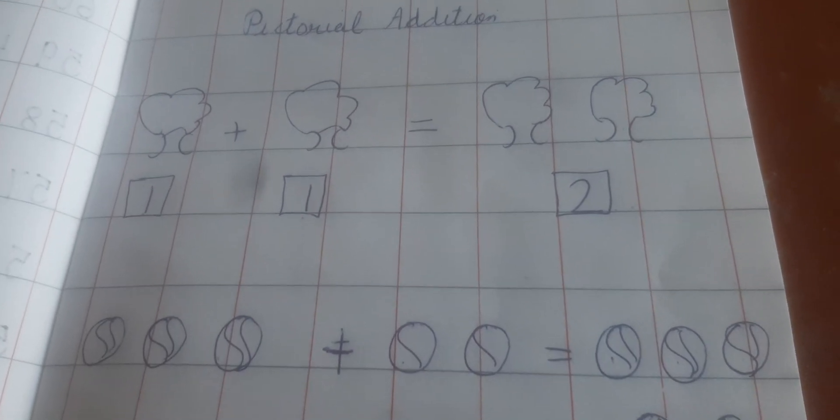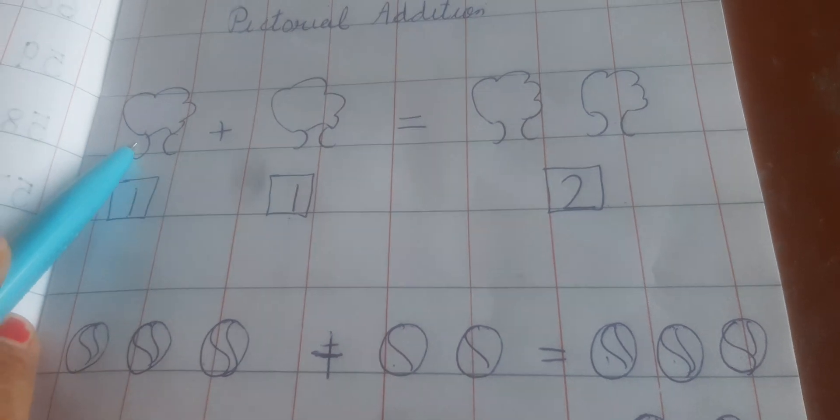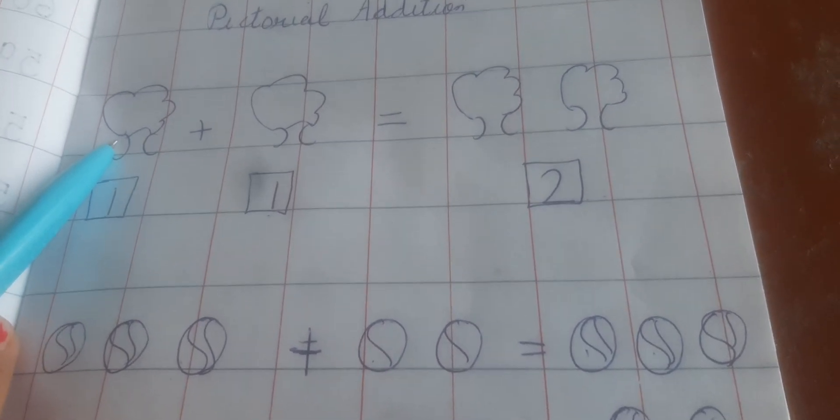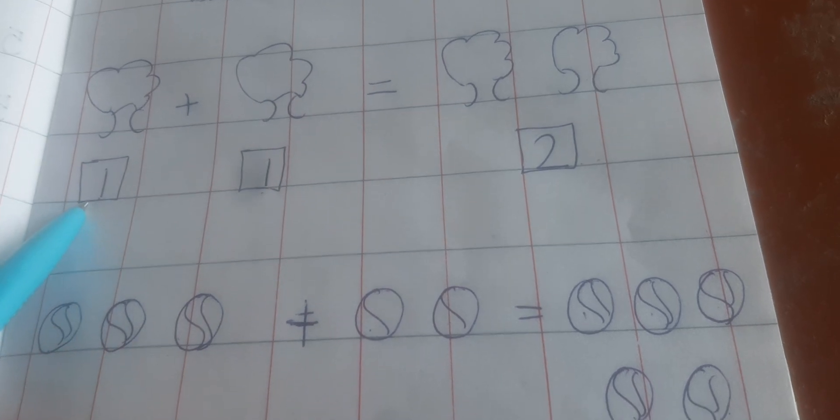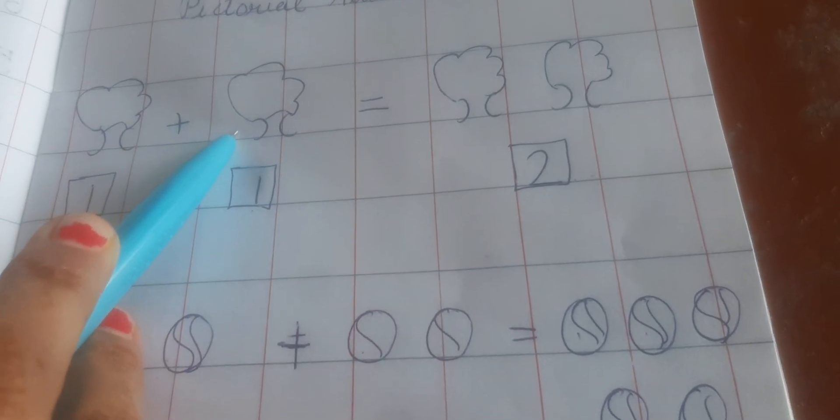For example, how many trees are there? 1 tree. Write down 1 in the box. How many trees are there? 1.